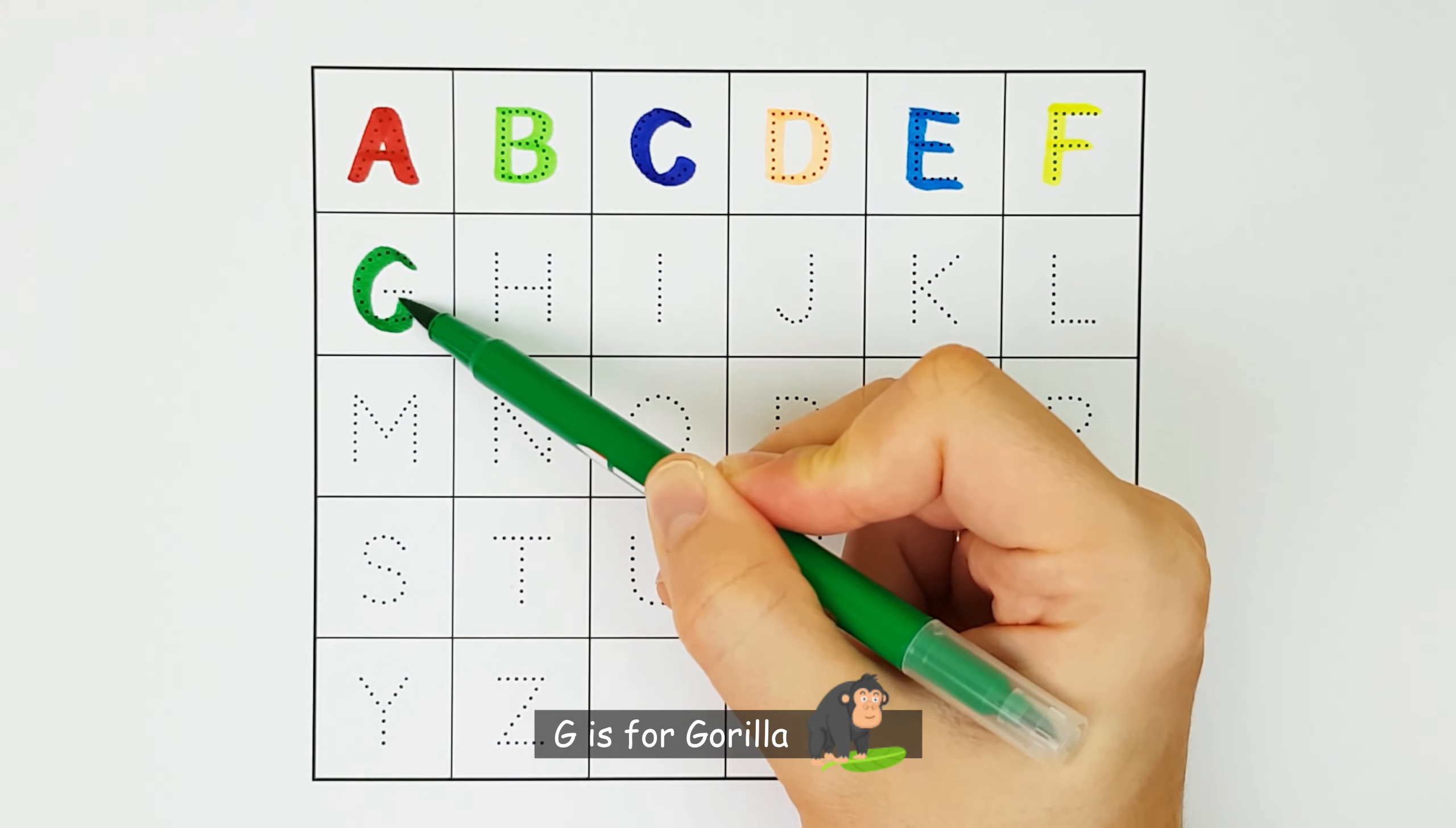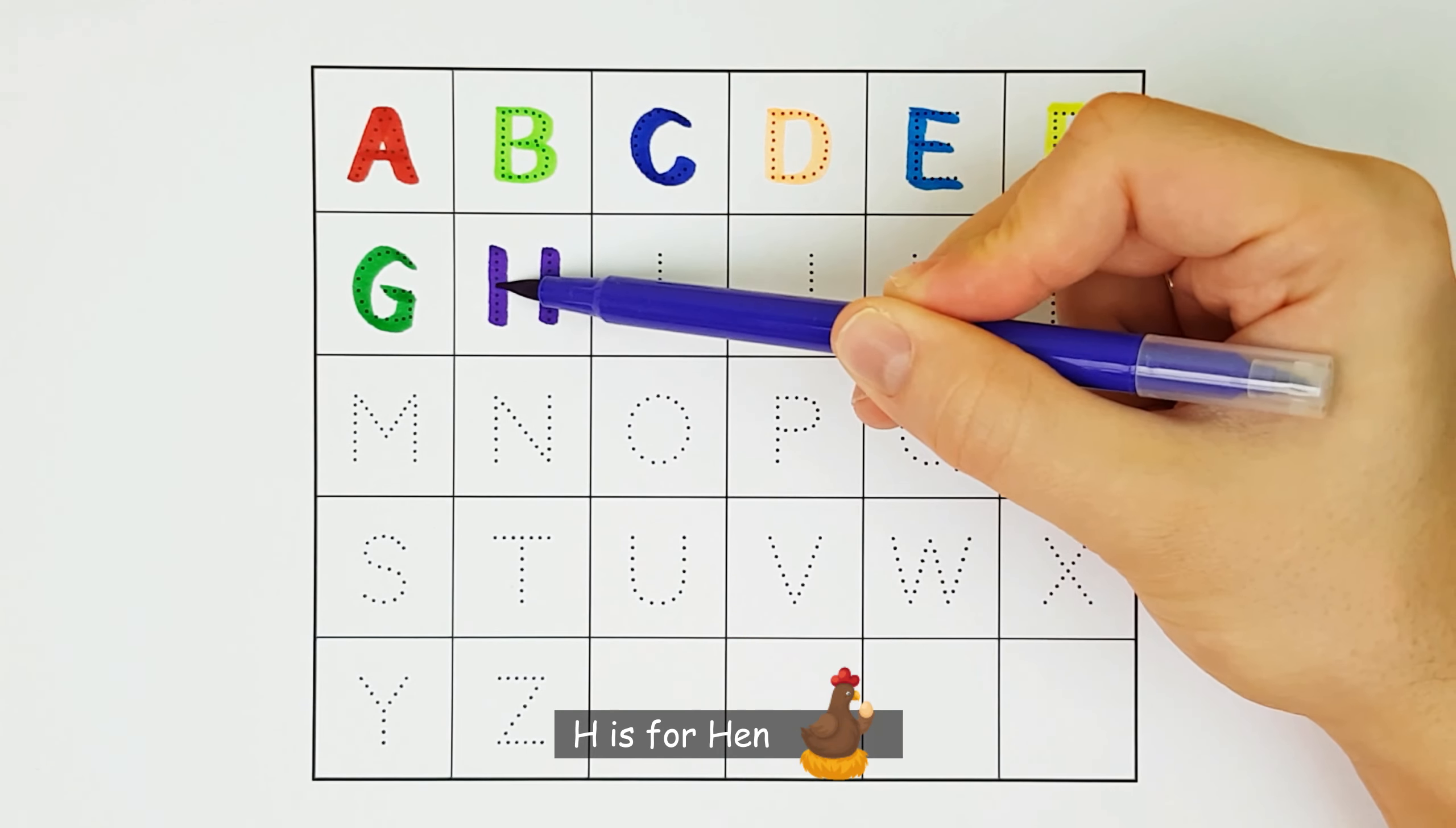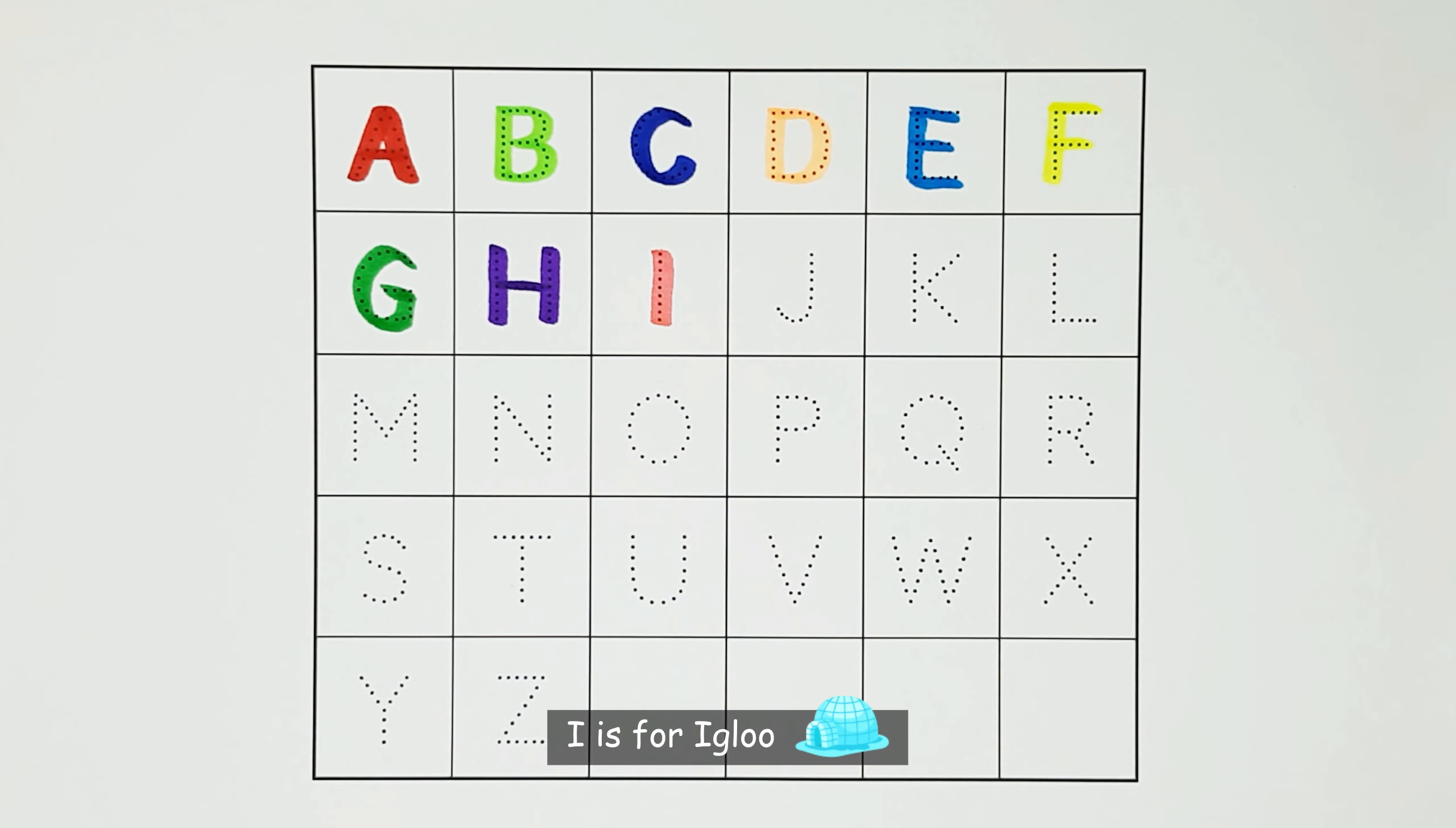G. G is for gorilla. G. H. H is for hen. H. I. I is for igloo. I.